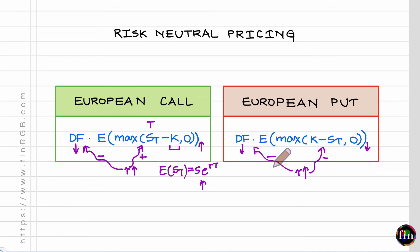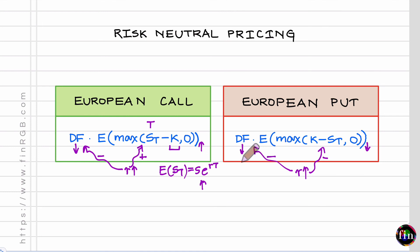Here, unlike for the call where we had one negative and one positive channel, for the European put both channels are negative. So this tells me that when interest rates go up, the value of my European put decreases. This video was about understanding the impact of changes in interest rates on the prices of simple vanilla options — European calls and European puts — using the risk-neutral pricing framework. Understanding how this framework works will not just help you understand these behaviors, but also help in understanding other areas of your derivatives curriculum as well.